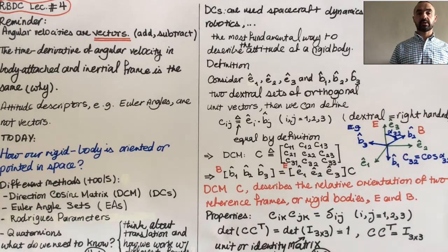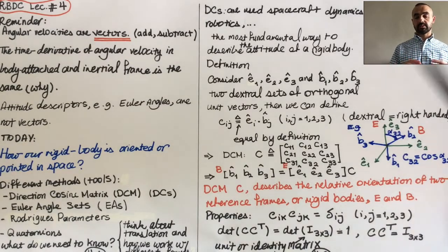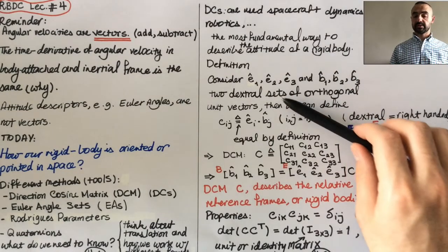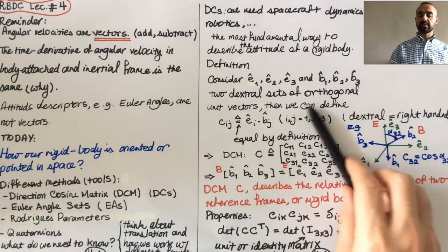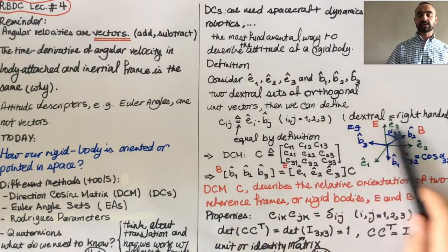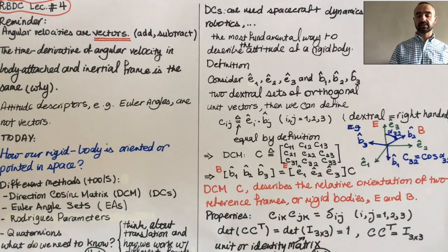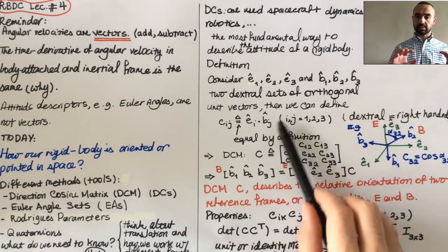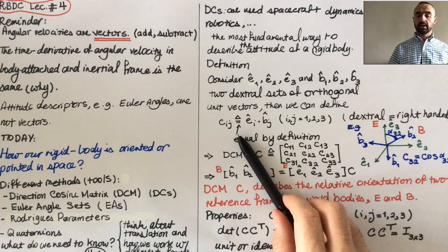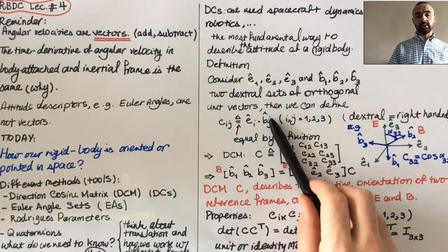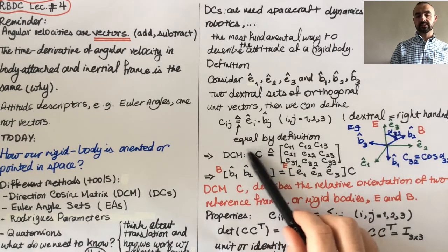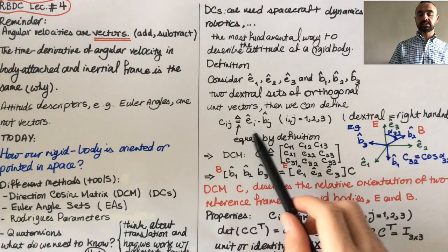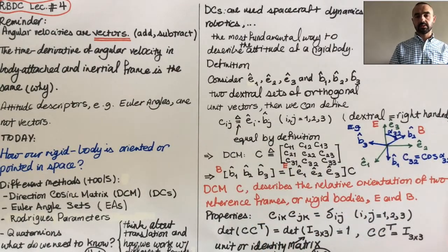Definition: if you consider two frames with two sets of dextral sets of orthogonal unit vectors, dextral simply means right-handed, so we always work with right-handed coordinate system. Then we define cij as ei dot bj hat. And if you don't know what this sign is mathematically, this is what mathematicians use to say equal by definition.